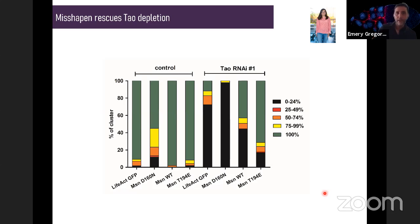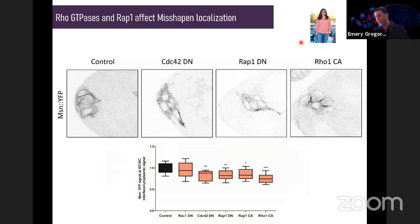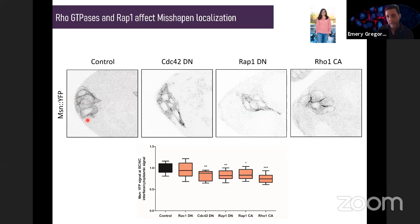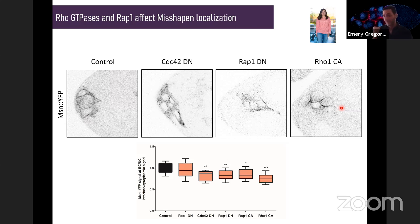This strongly suggests that misshapen is regulated and activated by Tao. Regarding Rho GTPases: misshapen is usually at the periphery, though this is a bit less obvious at the beginning of migration. When we perturbed the activity of several GTPases — Cdc42, Rac, or Rho — we have a relocalization of misshapen. This is very preliminary, but it suggests that GTPases may indeed have an impact on the localization of misshapen, and we want to see if there is a direct interaction between these proteins.